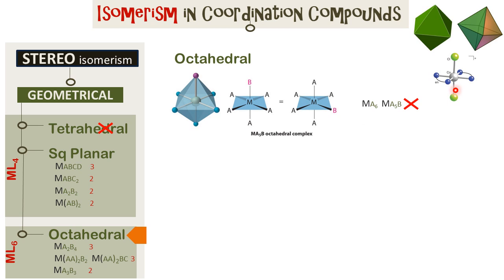In the octahedral complex, the central metal ion is surrounded by six ligands. Each of these ligands is at 90 degrees with respect to each other. The two blue ligands are at 90 degrees to each other, the green ligand is at 90 degrees with respect to each of the blue ones, and the angle between the two green ligands is 180 degrees. In complexes of type MA6 or MA5B, no isomerism is possible because each of the angles is 90 degrees.